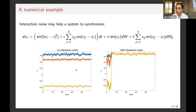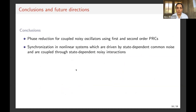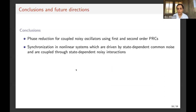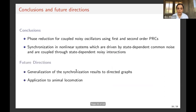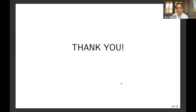To summarize: in this talk I covered phase reduction for coupled noisy oscillators using first- and second-order phase response curves. Then I talked about synchronization in a network of nonlinear systems driven by state-dependent common noise and coupled through state-dependent noisy interactions. I gave two conditions for synchronization. The future direction is to generalize these results to directed graphs, because as I showed at the beginning, the CPGs in insects are connected through a directed graph, and ultimately we want to apply these results to animal locomotion.